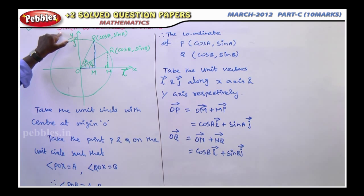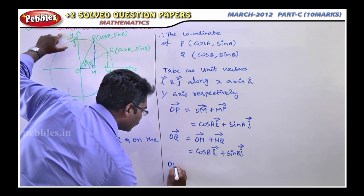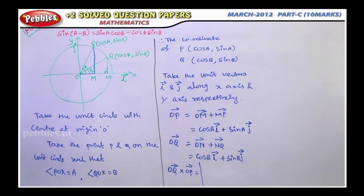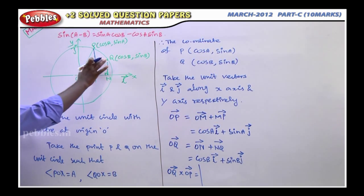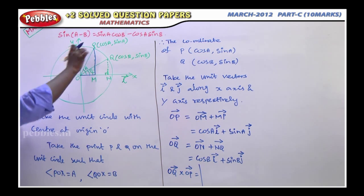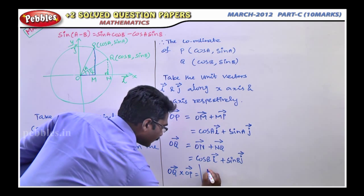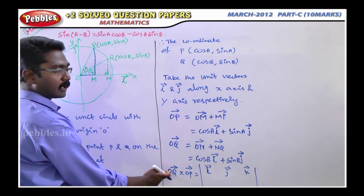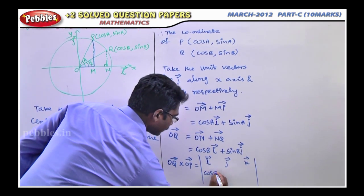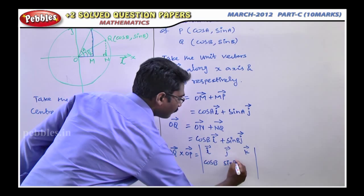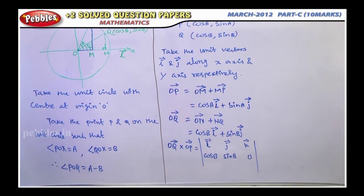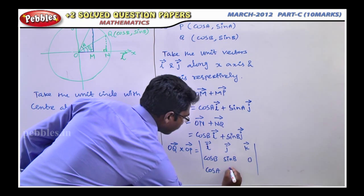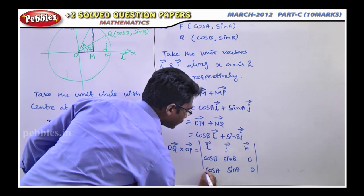The cross product is used in this problem. Therefore compute OQ cross OP in the anti-clockwise direction — first OQ vector, then OP. The determinant has first row i-vector, j-vector, k-vector; second row components of OQ: cos B, sin B, 0; third row components of OP: cos A, sin A, 0.